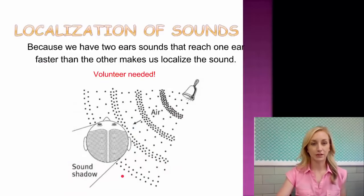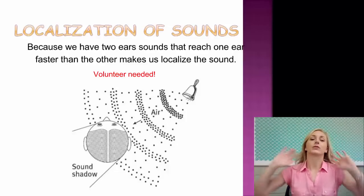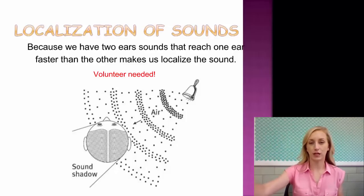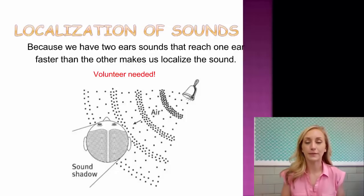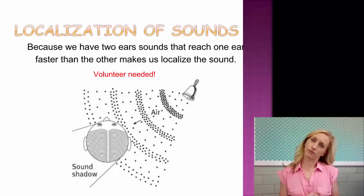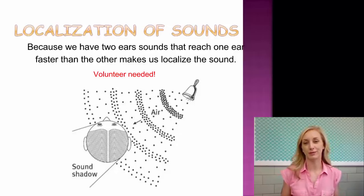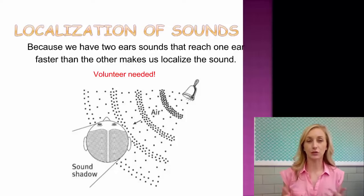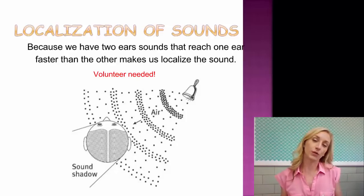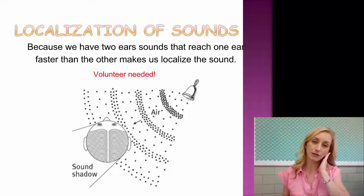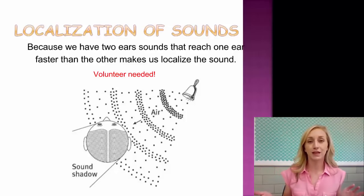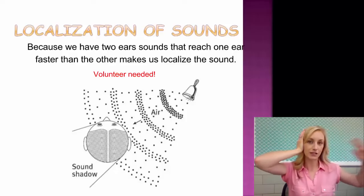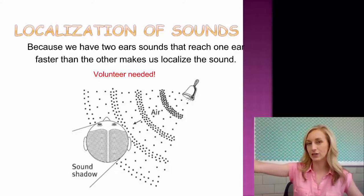Regarding the localization of sounds: we have two ears, and sounds that reach one ear faster than the other — even by just a split second — help us locate the source of a sound. Think about when a dog hears something and tilts its head — it's trying to localize the sound. It's putting one ear closer and shielding the other to find the direction. We do the same thing: if a sound hits our right ear first and our left ear second, we know the sound is coming from the right.